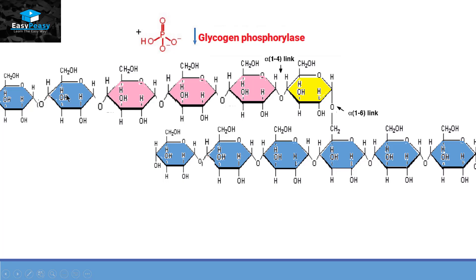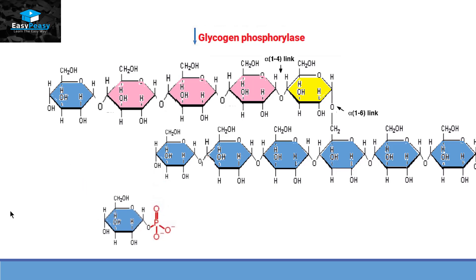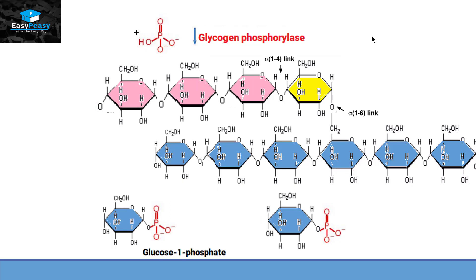In this picture, this molecule is at the end of the chain. The inorganic phosphate, with the help of this enzyme, is going to attach itself to this glucose molecule and make a new molecule called glucose-1-phosphate — called so because the phosphate attaches to carbon number 1. After that, the next glucose at the end becomes the new non-reducing end. Glycogen phosphorylase takes another phosphate molecule and removes that glucose as well, making another glucose-1-phosphate. In this way, glycogen phosphorylase removes each glucose molecule one by one until it reaches near the branch point.